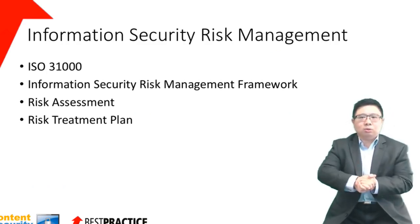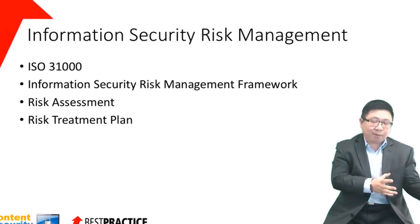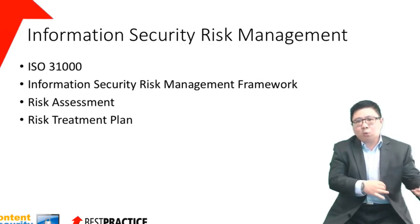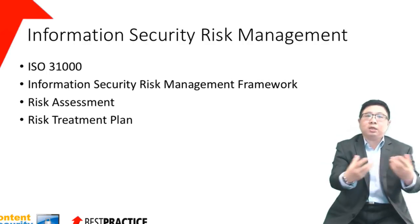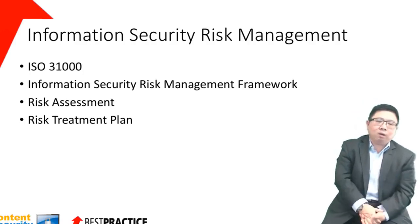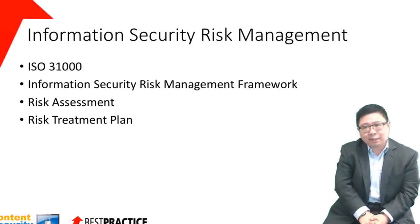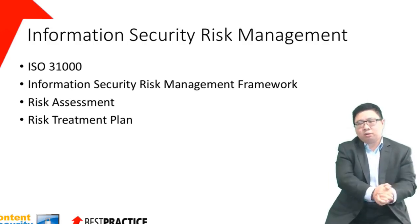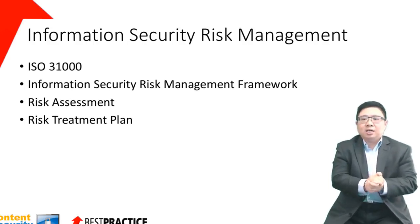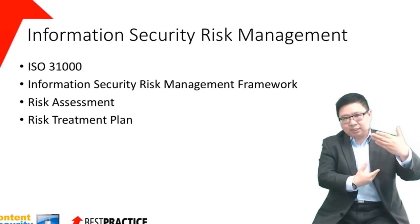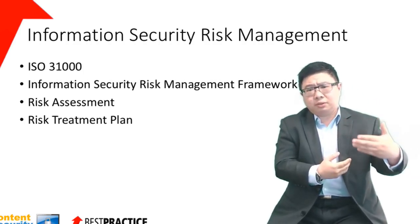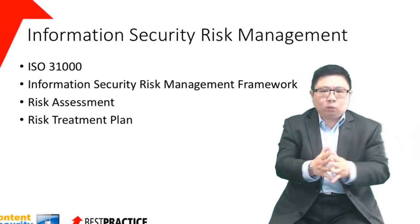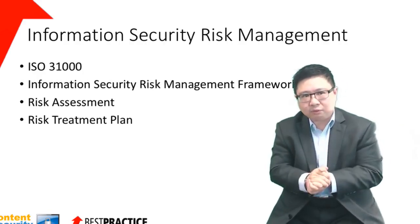So that brings us now to risk management. Now that we've set up the platform of where information security should be heading, and we have already set up a team of people that should be looking into information security, we now look at a risk-based approach towards managing information security. From the first phase — we call it the security governance phase — we have defined the risk management framework and the risk acceptance criteria, which have been signed off by the leadership team. Based on that, we now look at how we actually manage that risk.